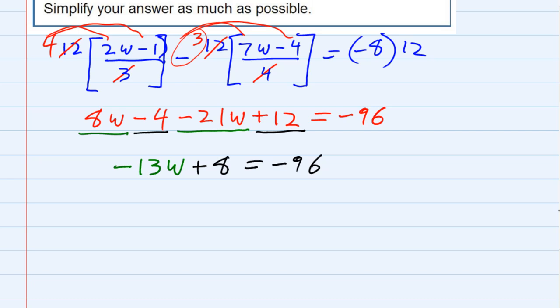So, definitely getting closer. To get the w term by itself though, I would like to move the term that's with the w term, the plus 8, I would like to move it to the other side by doing the opposite, subtracting 8. So, subtract 8 from both sides.